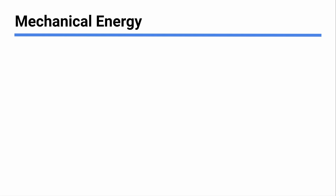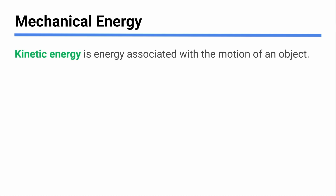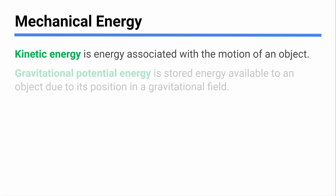There are a couple types of energy we want to know about. Kinetic energy is energy that has to do with a moving thing — if a thing is moving, it's got kinetic energy.